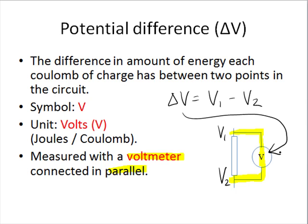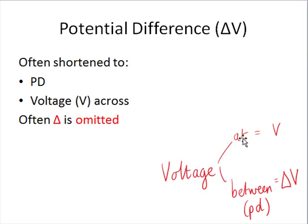Just as we often refer to both potential and potential difference as voltage, sometimes we use the same symbol — plain V — instead of delta V for potential difference. Unfortunately that can cause confusion. If you see voltage at a point, it means potential. If voltage is described across a component or between two points, even if written as V, it really should be delta V, because you're speaking about potential difference.